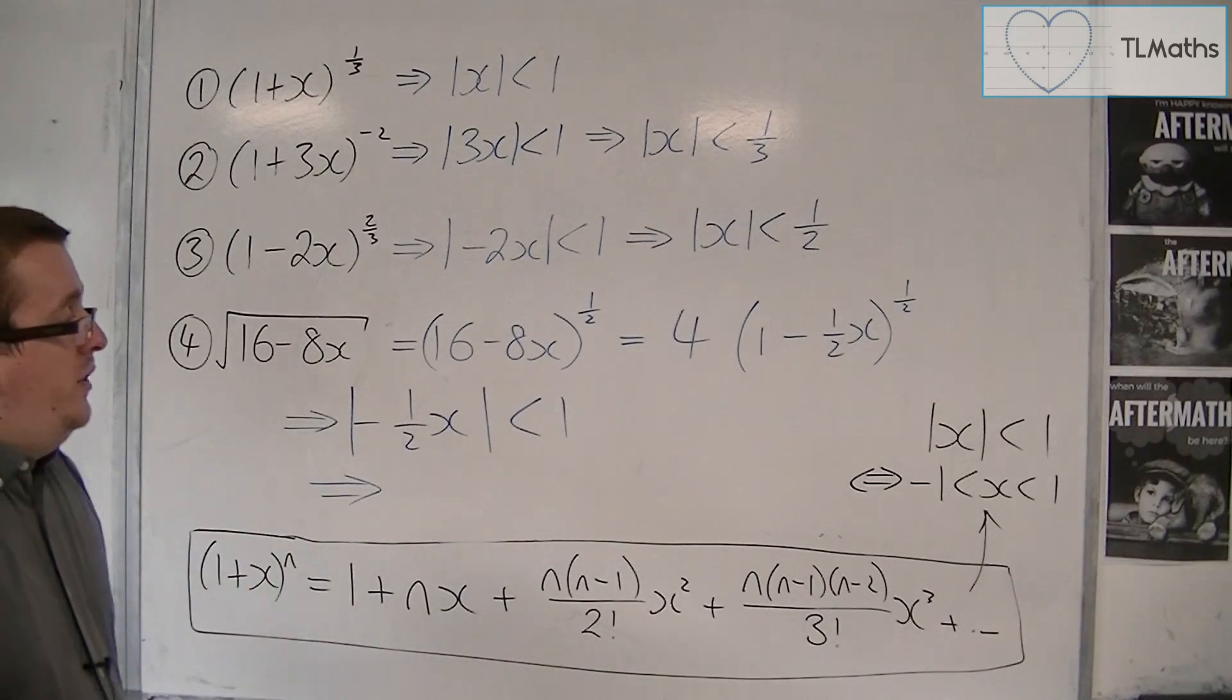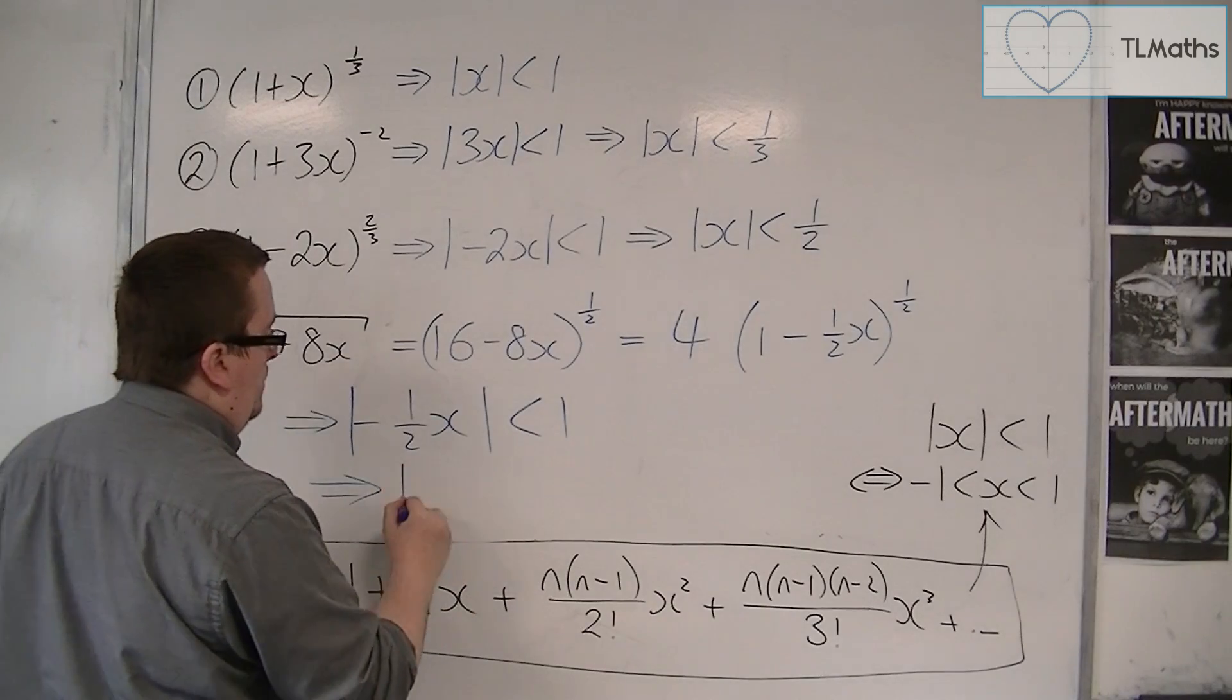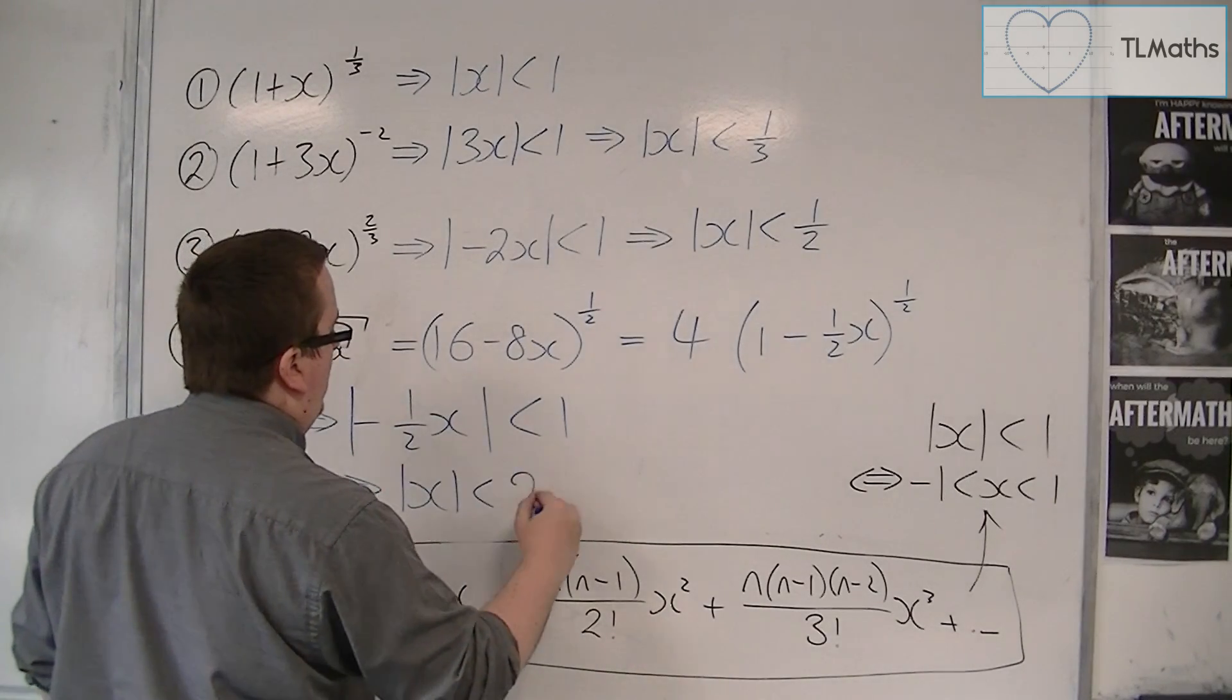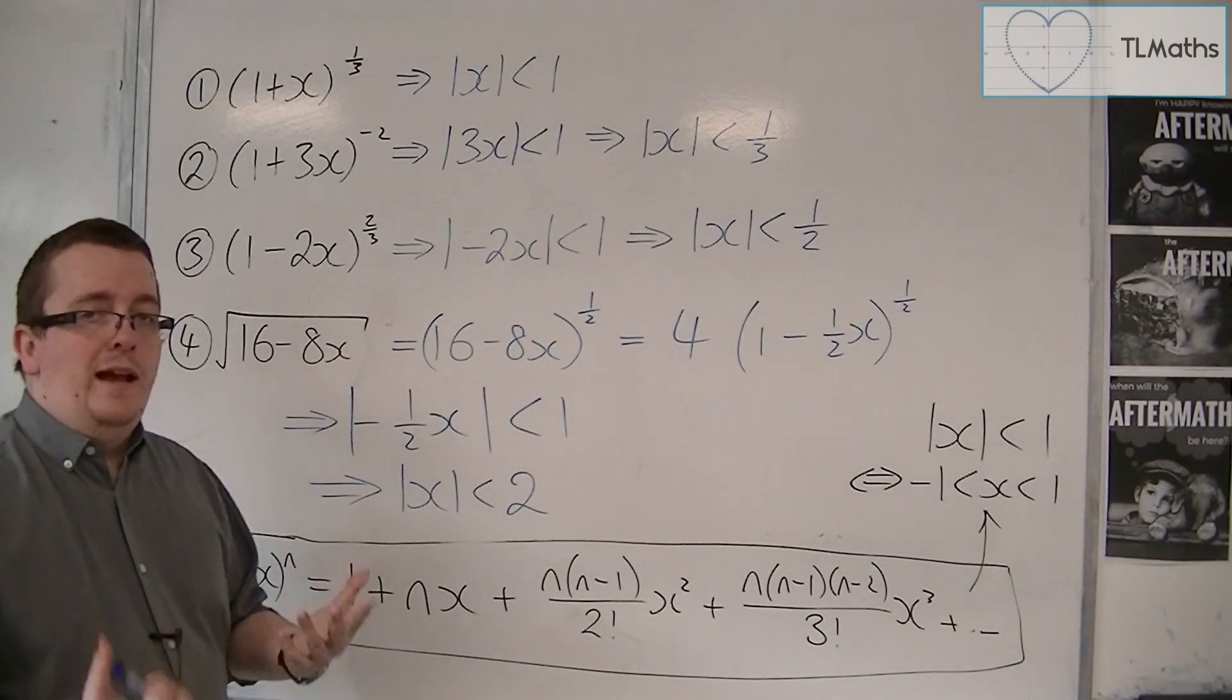Now, the modulus signs take care of the minus, and you can then multiply both sides by 2, and so mod x would be less than 2. So x can be anywhere between minus 2 and 2.